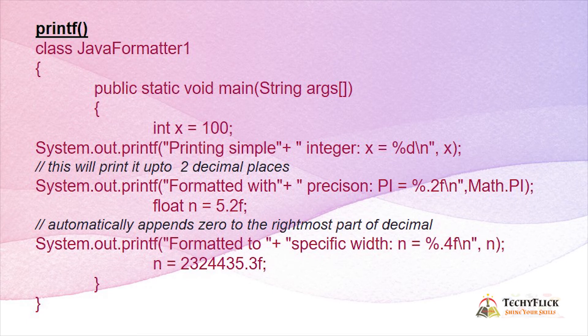int x equals 100. Next, printf "Printing simple" plus integer - we can concatenate that. Print simple integer, x value is 100. Percent d is the integer formatting operator. So that is f - that is format. Printf uses formatting operators. We can use percent d, slash n for next line, print x. So x value is 100, so the output is: printing simple integer x equals 100.